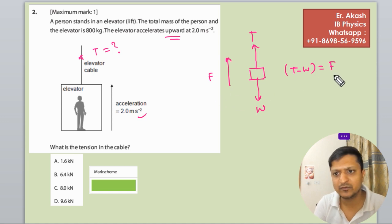And F is equals to mass into acceleration. So what we will do is mass total mass is 800 kg into acceleration is 2 equals to T minus weight of the body, that is the elevator and the person.